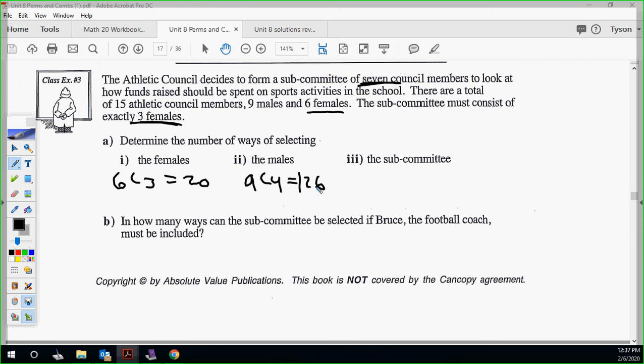How many different subcommittees can they have? What would you do? You would multiply those two numbers. Because your number of ways to get females have your number of ways to get males. So you would simply multiply it. So it would be 6C3 times 9C4. You can put it like that in your calculator with the brackets. It'll work just fine. And if you do that, you should get 2520 ways to do it.